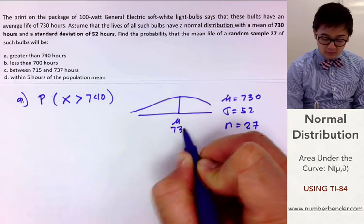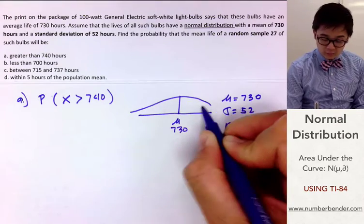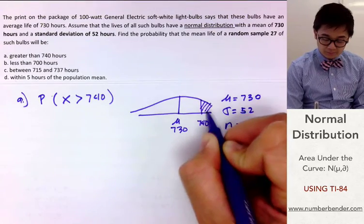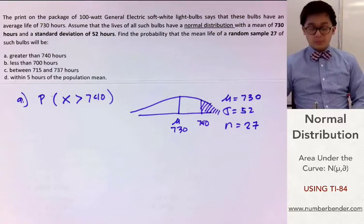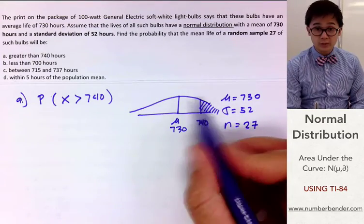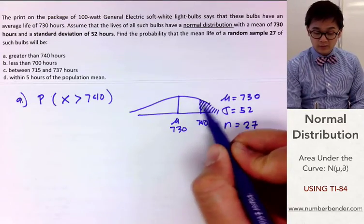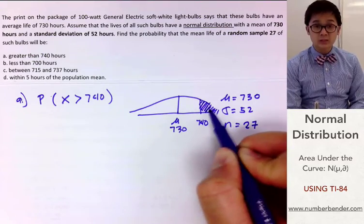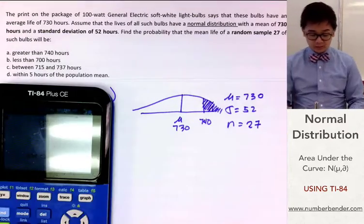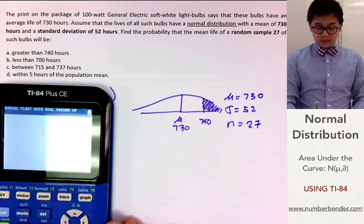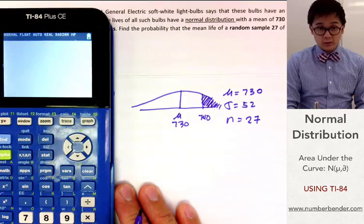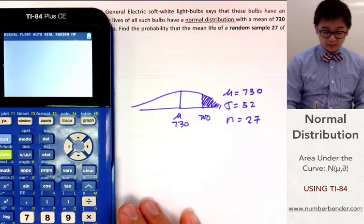If the mean is 730, then 740 is somewhere to the right. We need to find the probability that the lifespan is over 740, which is the area of the region to the right of 740 on the normal curve. Using the calculator will be a lot easier and faster than the Z-table — you just need to know the syntax for the TI-84.